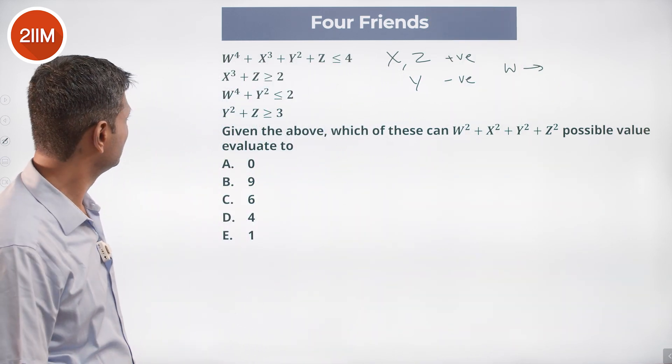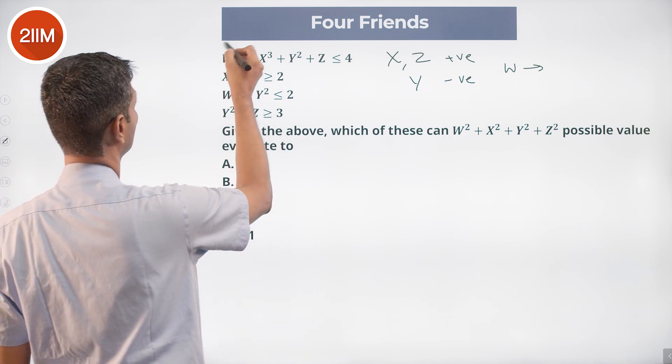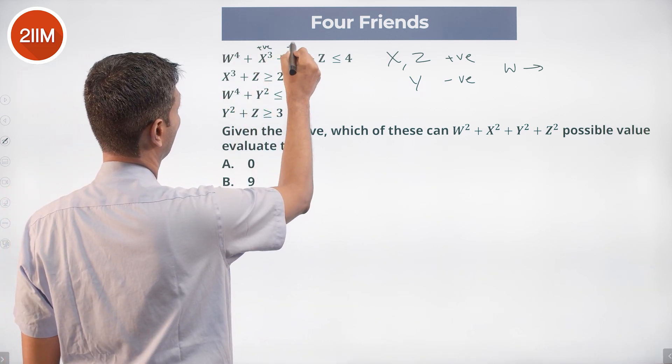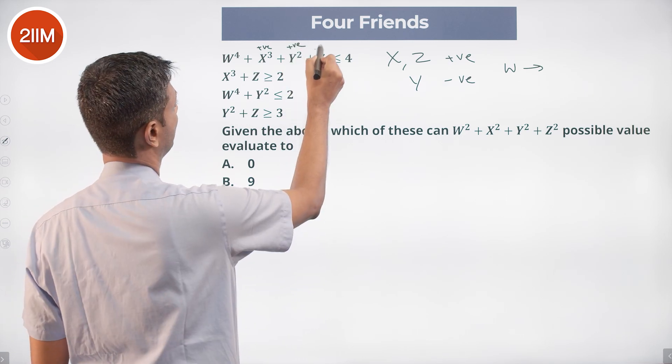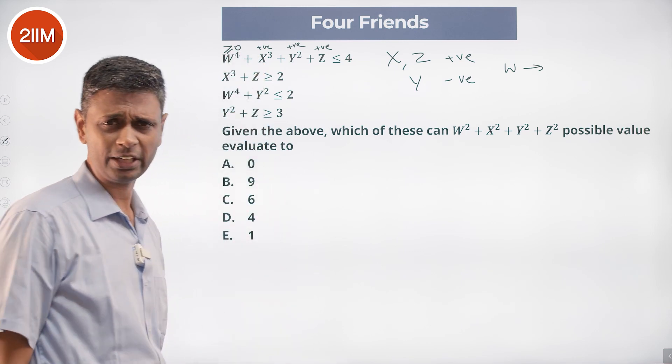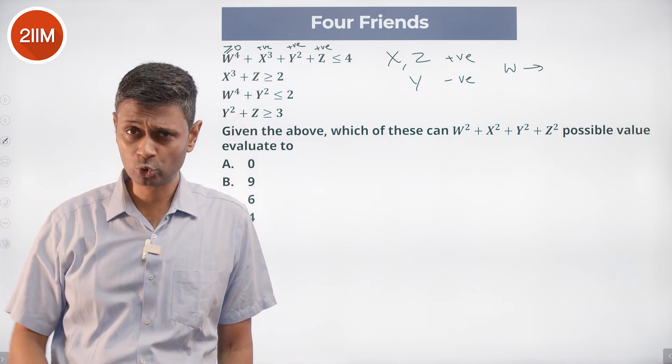Right, nice. So W⁴ could be anything. X³ is positive, Y² is positive, Z is positive. This is greater than or equal to 0. Nice, brilliant, super useful.